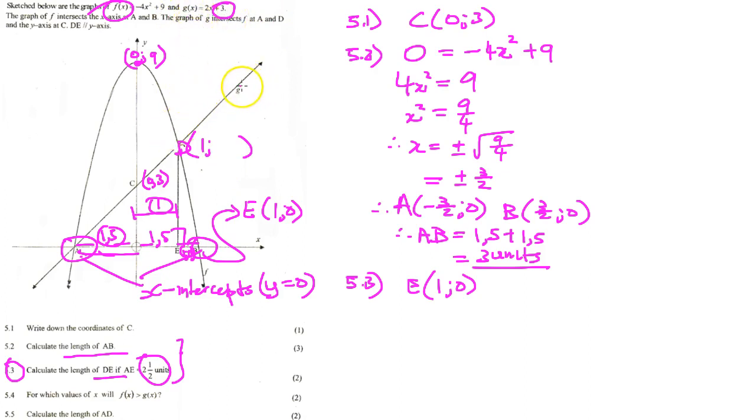I need to substitute into this equation for g, so it's going to be g(1) equals 2 times 1 plus 3 equals 5. Therefore D is going to be (1, 5).